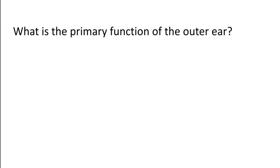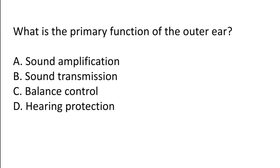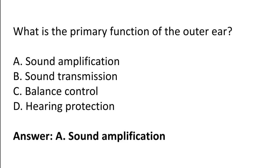What is the primary function of the outer ear? Options: sound amplification, sound transmission, balance control, hearing protection. The correct answer is option A — the primary function of the outer ear is sound amplification.